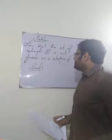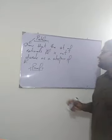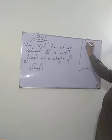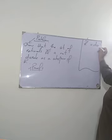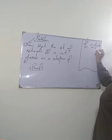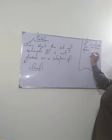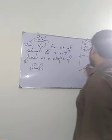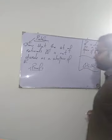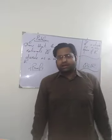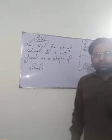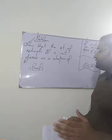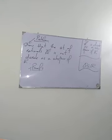Today's problem is: the set of rationals Q is not discrete as a subspace of R. From the previous video, we established that Z is discrete as a subspace of R. Now, Q is obviously a subset of R, so we can talk about the subspace topology on Q with respect to R. And always, unless another topology on R is mentioned, you always consider the usual topology on R.